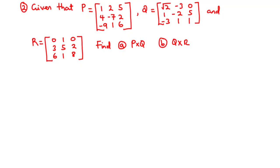For question 2, given that P = [1, 2, 5; 4, −7, 2; −9, 1, 6], Q = [√2, −3, 0; 1, −2, 5; −3, 1, 1], and R = [0, 1, 0; 3, 5, 2; 6, 1, 8], we are going to find: A) P times Q, and B) Q times R.